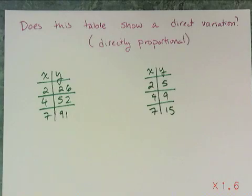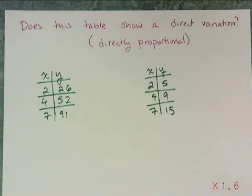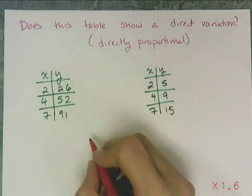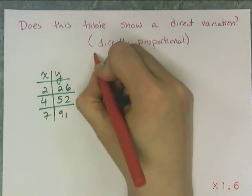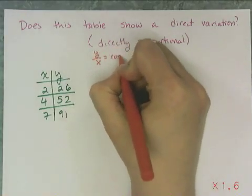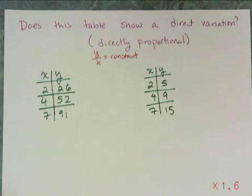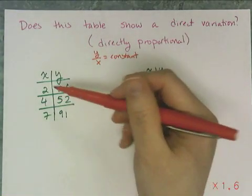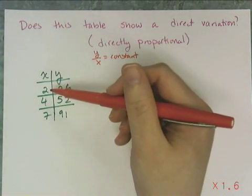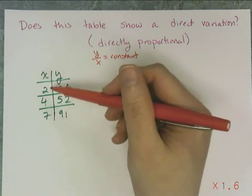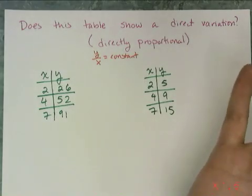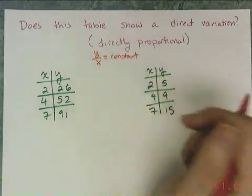I need to determine if a table of data represents a direct variation — does the table show a directly proportional relationship between x and y? In a direct variation, y over x is constant, and that gives me a test. Note that the tables from now on are no longer sequential like in the sequences unit; the values will jump around. Luckily I have the test: y over x is constant for something that's directly proportional.